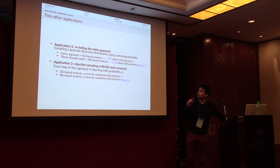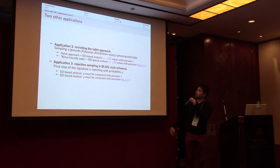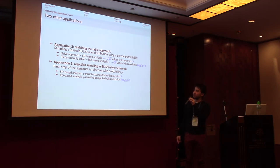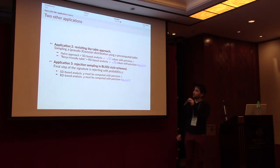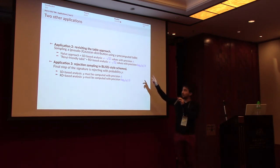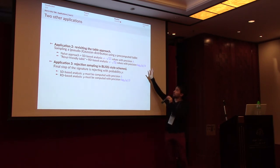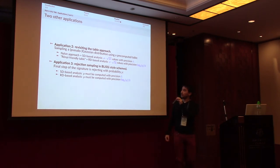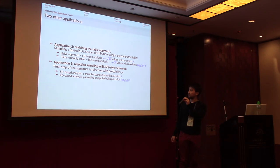The second application revisits the table approach. Suppose you want to sample a discrete Gaussian distribution using a pre-computed table. With the naive statistical distance-based analysis, you get a table of a certain size and precision. With a Rényi-based analysis using a Rényi-friendly table, the number of table entries depends on Q rather than λ, and similarly the required precision becomes log₂(Q)/2 instead of λ. Likewise, for rejection sampling in BLISS, instead of computing the probability p with precision λ, you compute it with precision log₂(Q)/2.